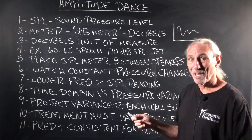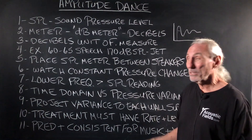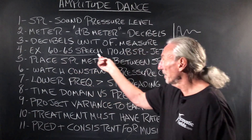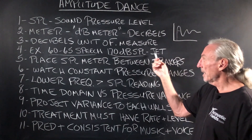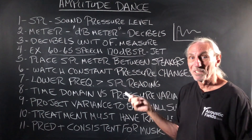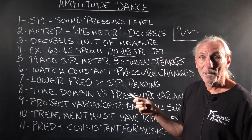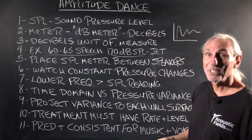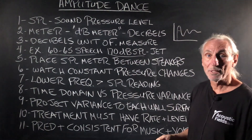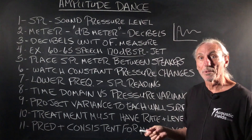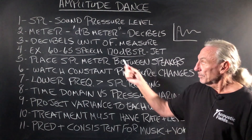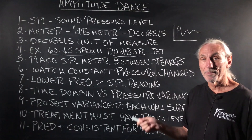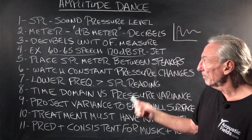Doesn't mean anything on its own, right? Let's give some examples and I think you'll understand. Normal speech: 60–65 dB SPL — there's a reference. Jet engine: 170 dB SPL — that can blow your eardrums out. So there are two extremes, minimums and maximums, that we can look at and reference.